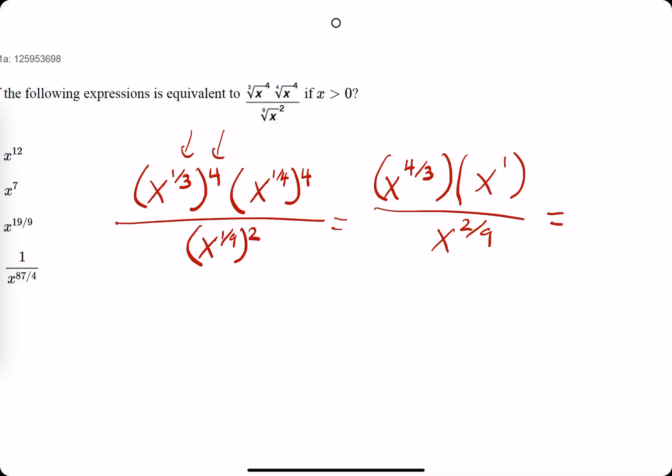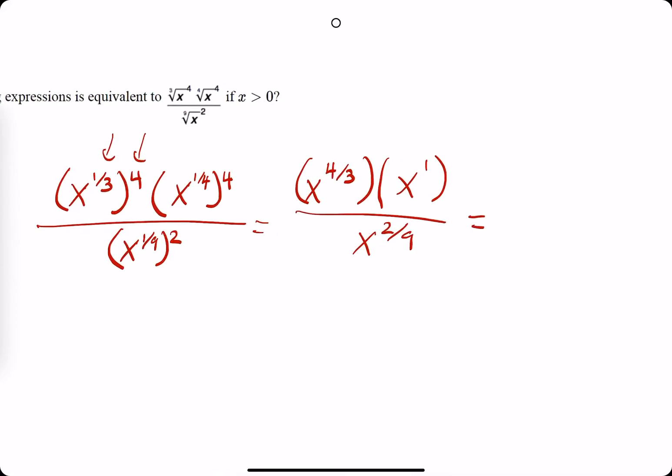So now, you want to combine any terms in the numerator and denominator. So in the numerator, we have x to the four-thirds times x to the first. When we have x to the a times x to the b, what we do is add those exponents, x to the a plus b. So in this case, we have x to the four-thirds plus one.